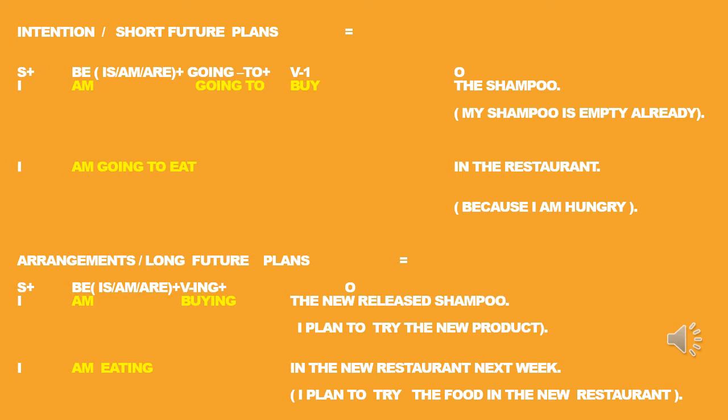Both 'be going to' and present continuous are used to show future plans. The difference is: if you use the 'be going to' form, you may not cancel your plan or arrangement. What you have planned, what you have arranged, you must really do it and you cannot go back. But for the present continuous, you may still cancel it. So both are future plans, but the difference is 'be going to' — what you plan, you do it. But for present continuous, you may cancel it anytime you want.